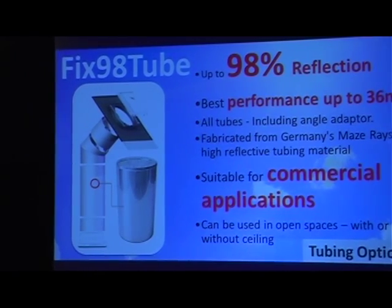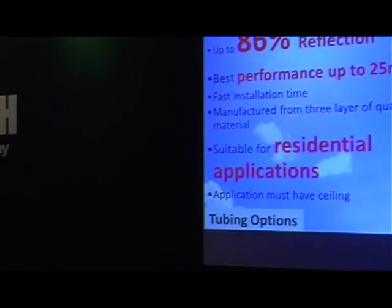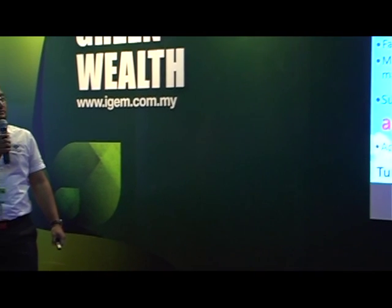The second type is the Flexi 86. Why 86? Because it achieves up to 86% reflection. Best performance covers up to 25 square metres. It is a fast installation, suitable for residential — and office use too — but it must have a ceiling.